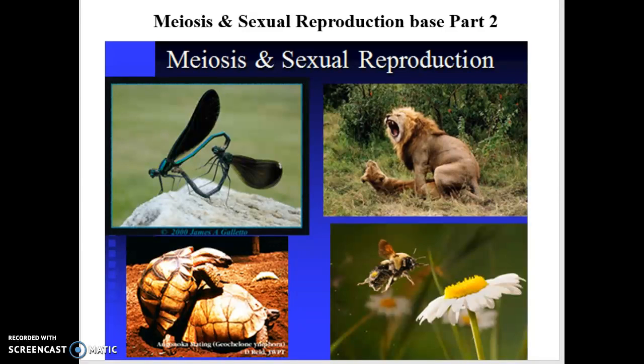And then when they combine during sexual reproduction, what are the possible outcomes? And why do we see genetic diversity through this process?